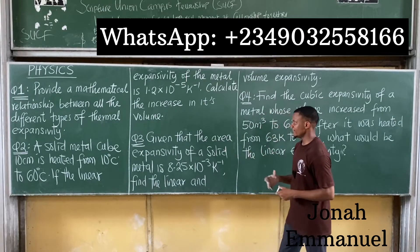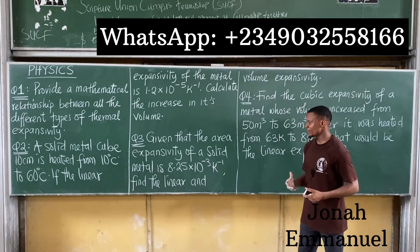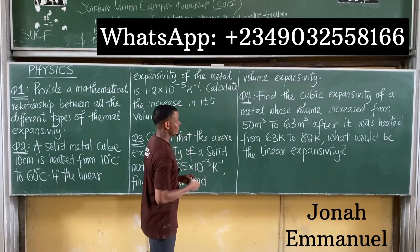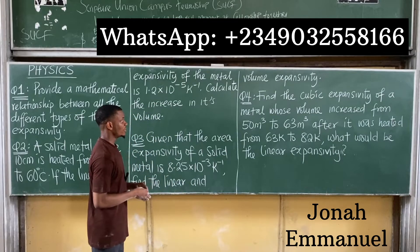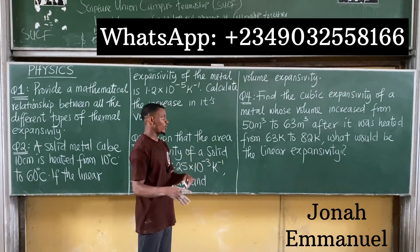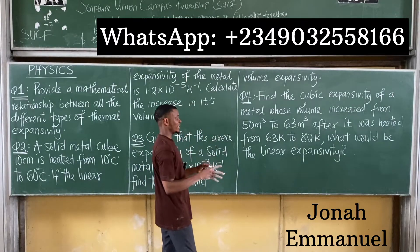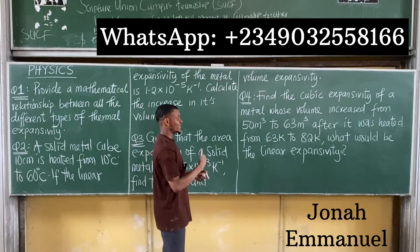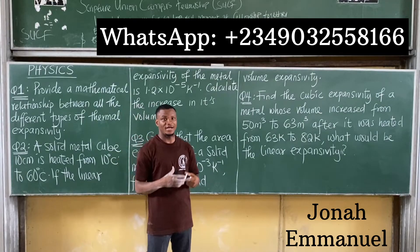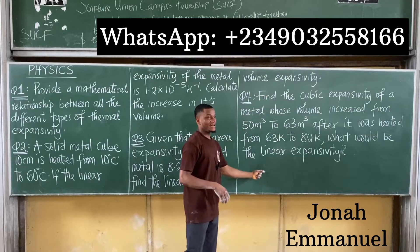Number three says: given that the area expansivity of a solid metal is 8.25 times 10 to the power minus 3 per kelvin, find the linear and volume expansivity. Number four says: find the cubic expansivity of a metal whose volume increased from 50 meter cube to 63 meter cube after it was heated from 63 kelvin to 82 kelvin. What would be the linear expansivity? So we're looking for both cubic expansivity and linear expansivity in this question.